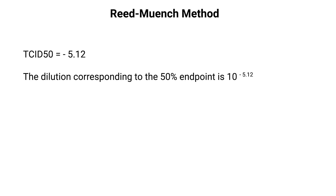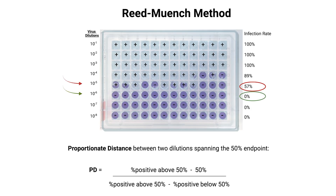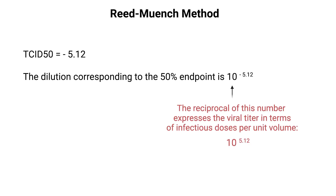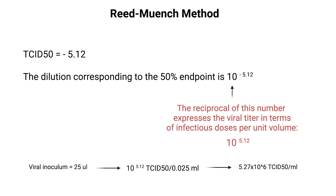The endpoint dilution, therefore, is 10 to the minus 5.12. While we knew that the 50% endpoint was somewhere between the 10 to the minus 5 and 10 to the minus 6 dilutions, we've now pinpointed the precise 50% endpoint. The reciprocal of this number expresses the viral titer in terms of infectious doses per unit volume. Since the viral inoculation volume in the first row of the 96-well plate was 25 microlitres, we need to convert the TCID50 to TCID50 per milliliter.